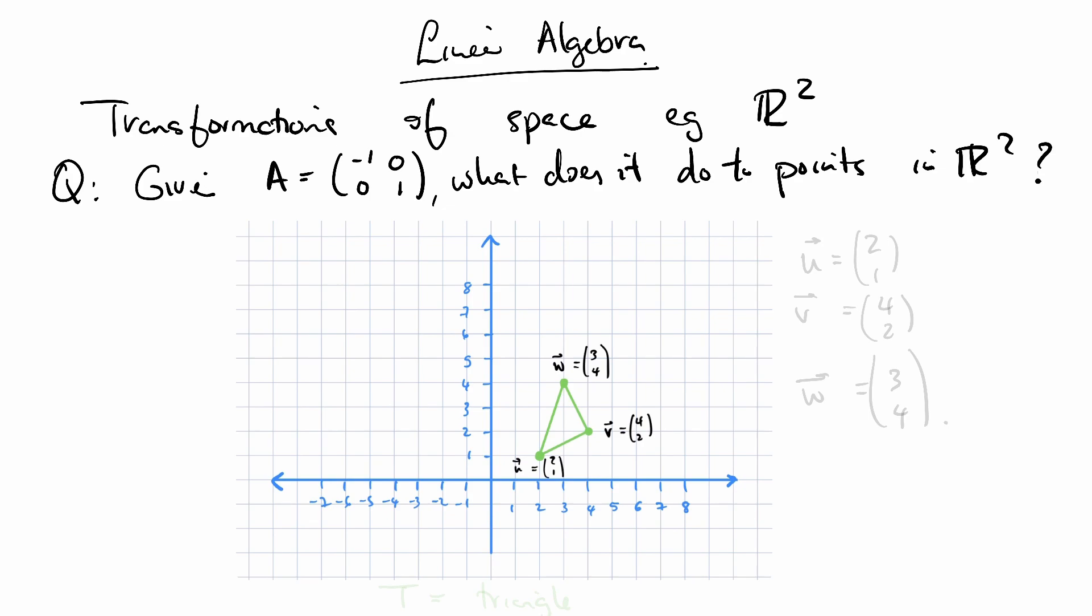If I, via left multiplication, applied this matrix to every single vector in R2, what would the new space look like? This is kind of a hard question to answer. And so I want to focus our attention by looking at a specific shape in R2. And we can track what A does to all of R2 by looking at what it does to this triangle T.